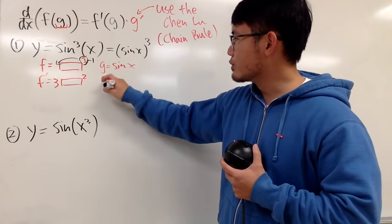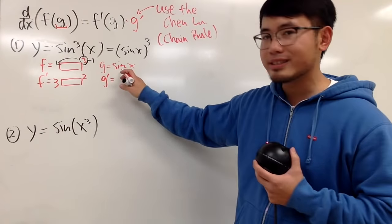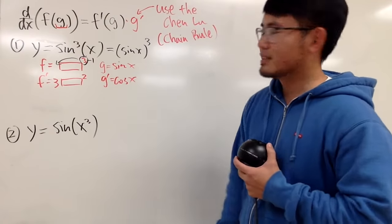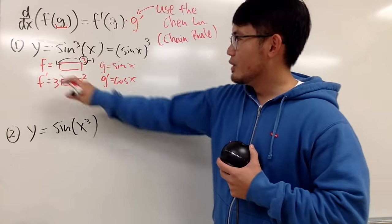And now right here, you also have to get the g prime, which is going to be what? The derivative of the sin x is cos x. Very nice. Cos x. And guess what? Look at this.